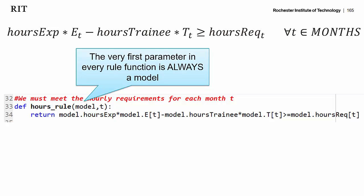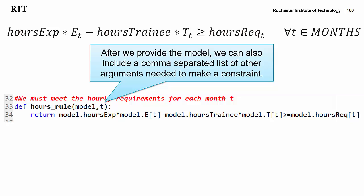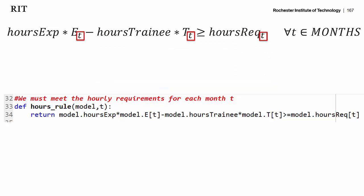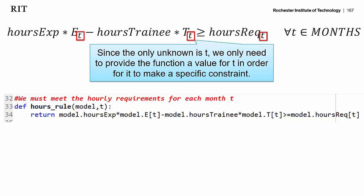Every single one of our rule functions has to be passed a model. Here you can see we're passing this rule function a model, and that model gets used throughout this function many times. After we've provided the rule a model, we can provide it as many parameters or arguments as it needs to make a single constraint. Looking at our formulation constraint, we see that we're using the value t — that's our unknown. Since t is the only thing we don't know, that's what we need to provide this constraint in order for it to make a specific instance.